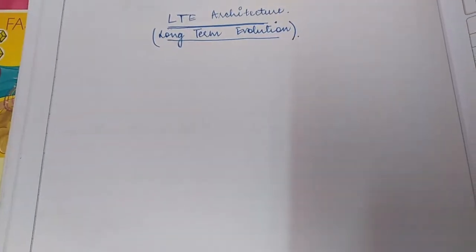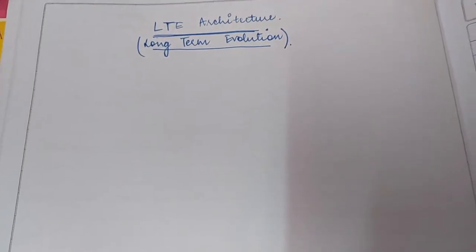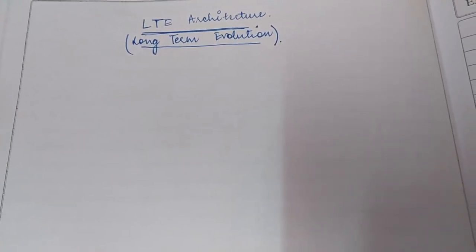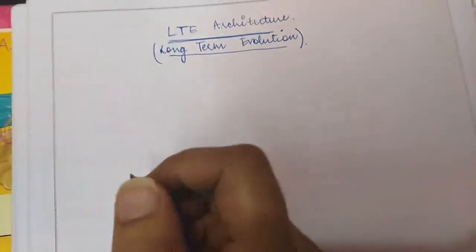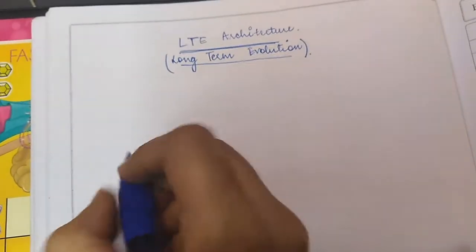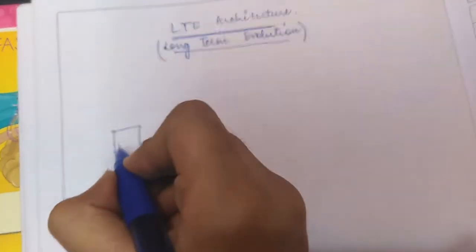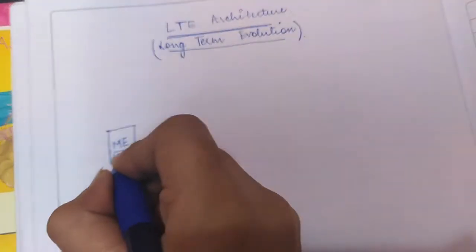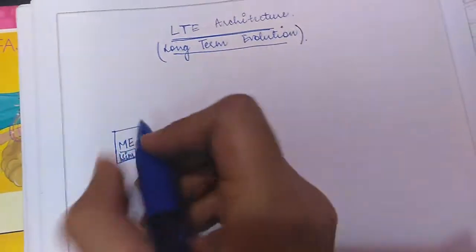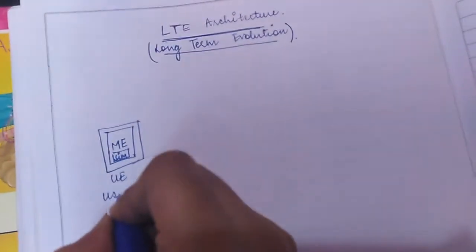Hello friends, today I will teach you about the LTE architecture, or we can say the long-term evolution architecture or the 4G architecture. So in this architecture, let's get started. First of all, we have our mobile equipment, and when we add on a SIM to our mobile equipment, it forms a UE, that is a user equipment.